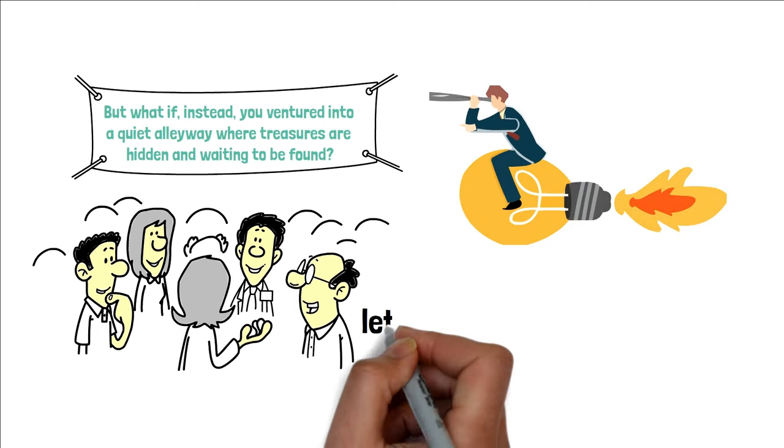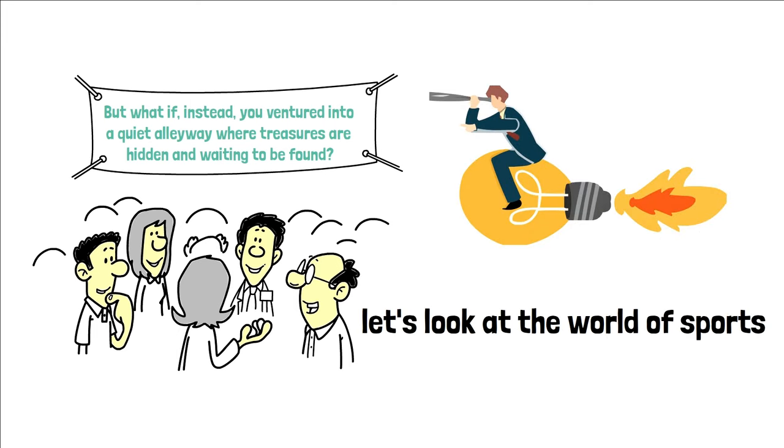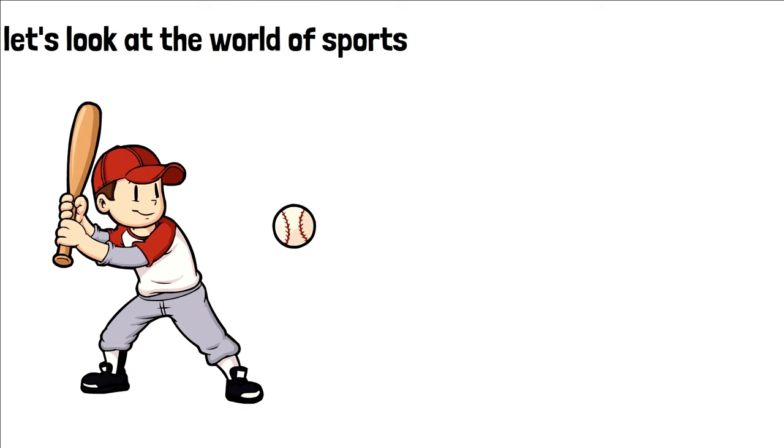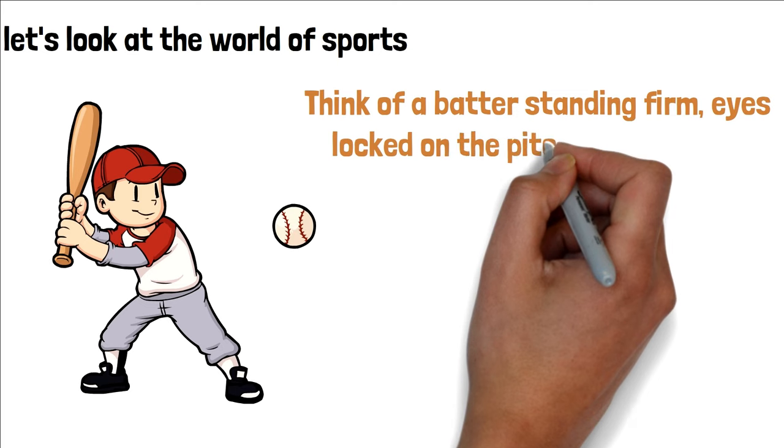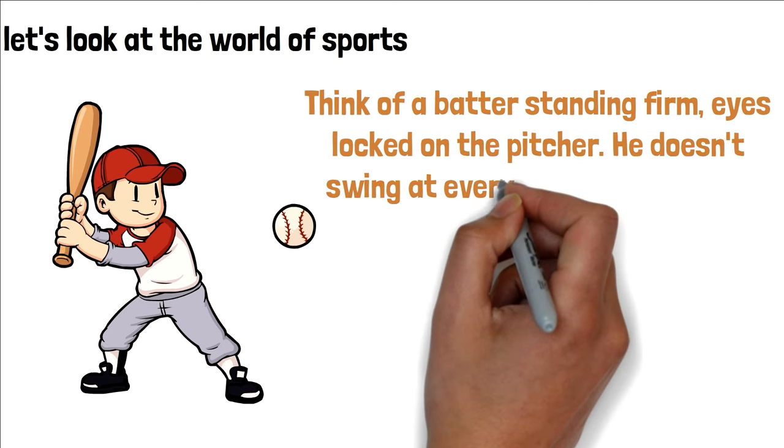These smaller, insufficient markets are your alleys, rife with overlooked opportunities. To paint a clearer picture, let's look at the world of sports. Munger compares investing to a baseball game. Think of a batter standing firm, eyes locked on the pitcher.